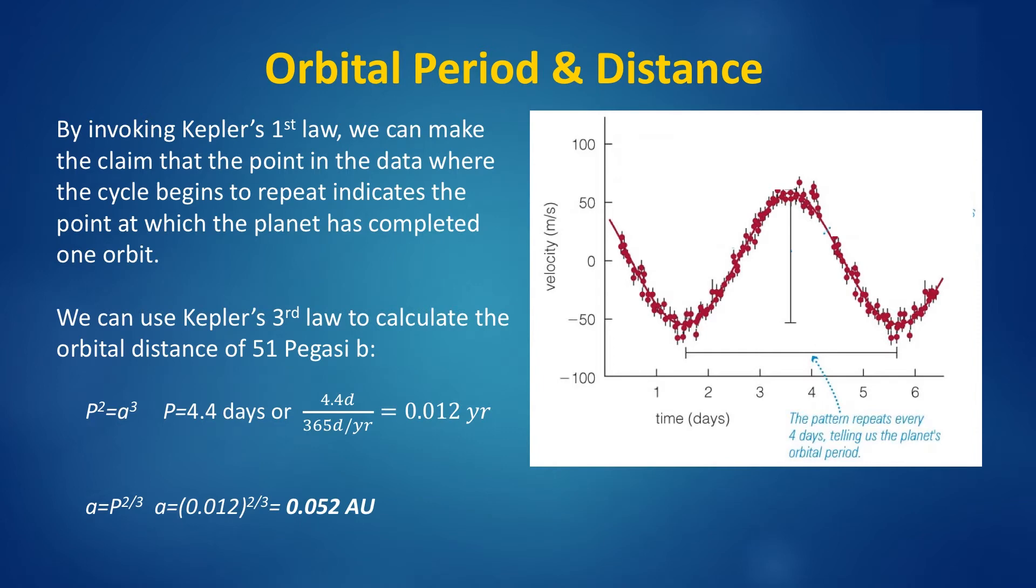And so the answer that comes out of this calculation is 1/20th of an astronomical unit, 0.05 astronomical units, or 20 times closer to the star than the Earth is to the sun. This is the equivalent of having a planet half the size of Jupiter orbiting the sun every four and a half days, well inside the orbit of Mercury.